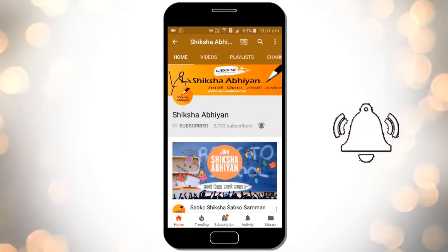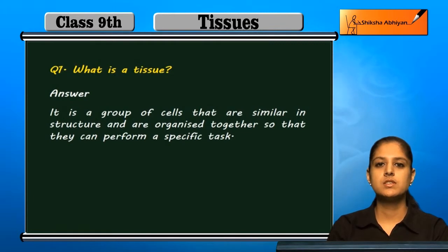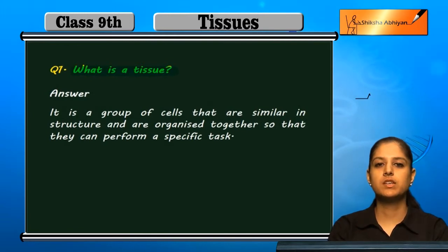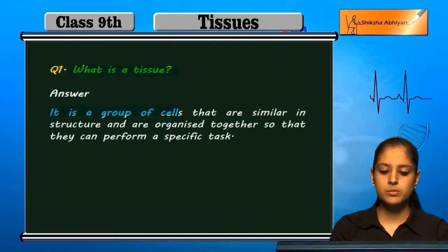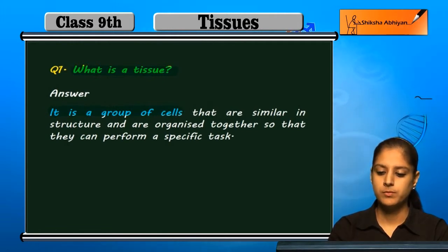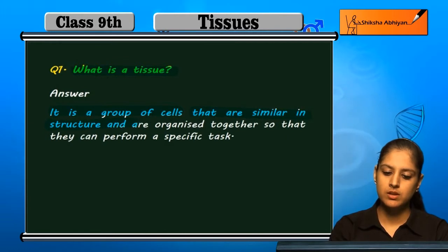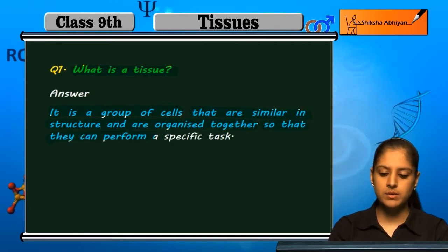Students, let us discuss some questions. First question: what is a tissue? A tissue is a group of cells that are similar in structure and are organized together so that they can perform a specific task.